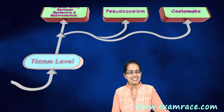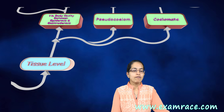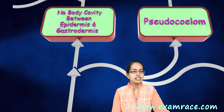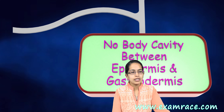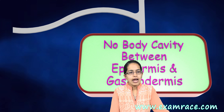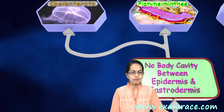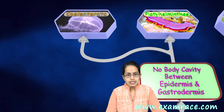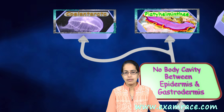Coming on to the tissue level of organization, there are three important categories. The first important category is where there is no cavity present between the epidermis and gastrodermis. Good examples for this first categorization are Coelentrata and Platyhelminthes.